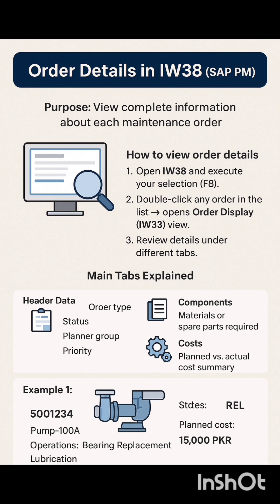IW38 can also give you detailed order information. Open IW38, execute your selection with F8, and then double-click on any order in the list — it opens the order display in IW33 view. You can review details under different tabs: in Header Data it shows order type, status, planner group, and priority; in Components it shows materials or spare parts required; in Costs it shows plan versus actual cost summary. For example, order 5001234 is for Pump 100A, the operation is bearing replacement and lubrication, the status is Released, and the planned cost is 15,000.